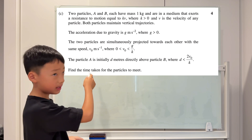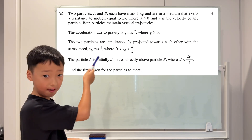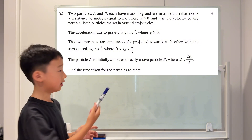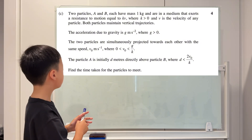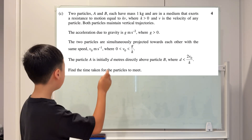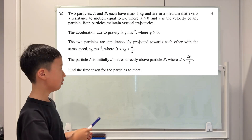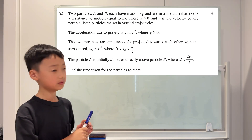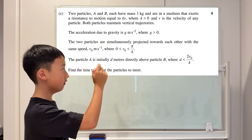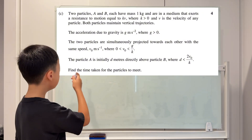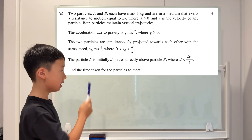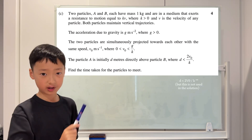Both A and B have vertical trajectories. The gravity G is greater than 0, and both particles are simultaneously projected towards each other with speed V0. The range for V0 is V0 is greater than 0 and smaller than G over K. A is initially D meters directly above B, where D is smaller than G over K.